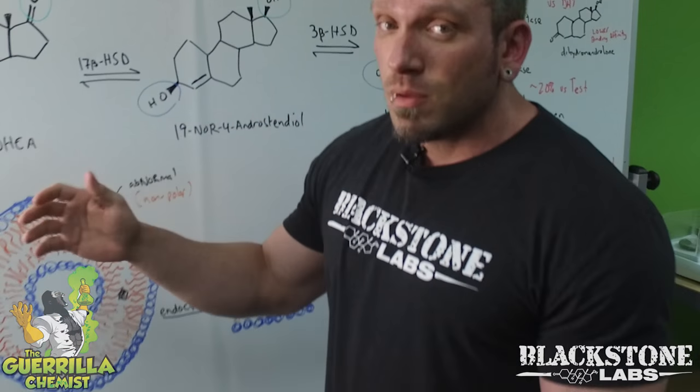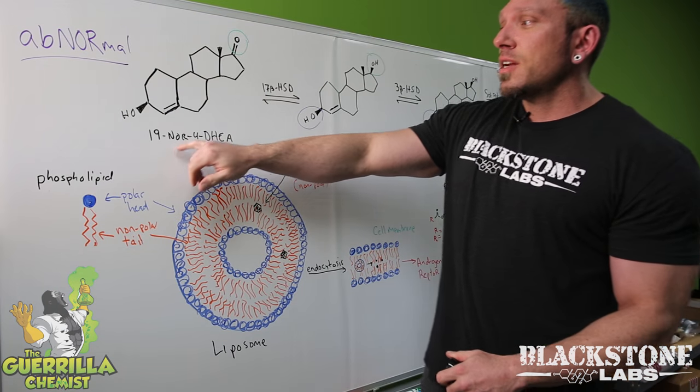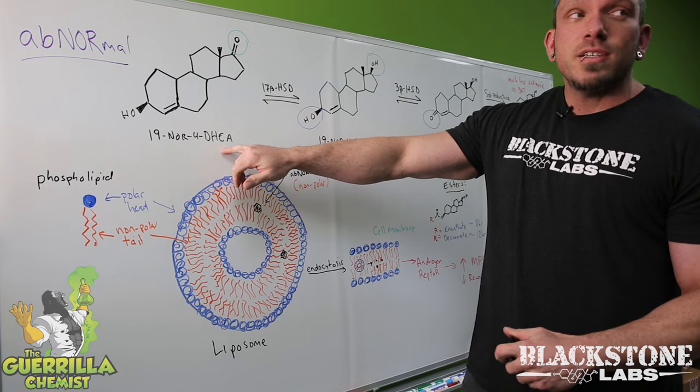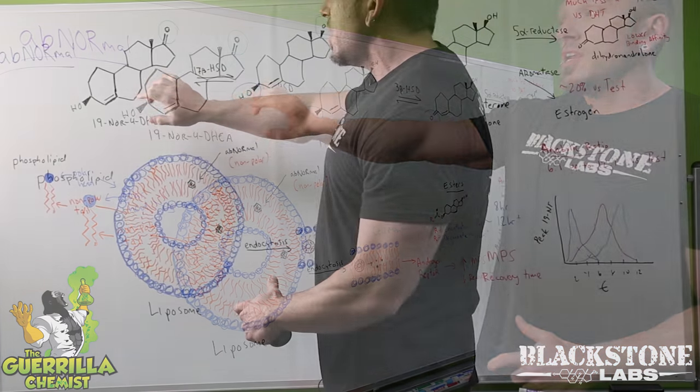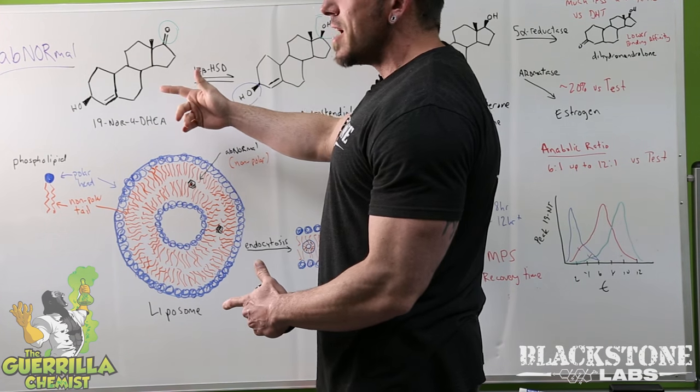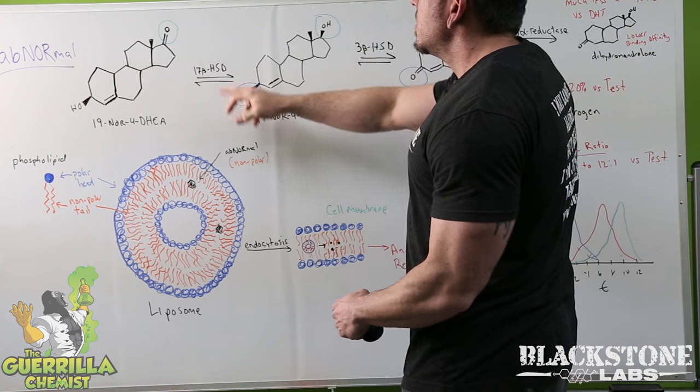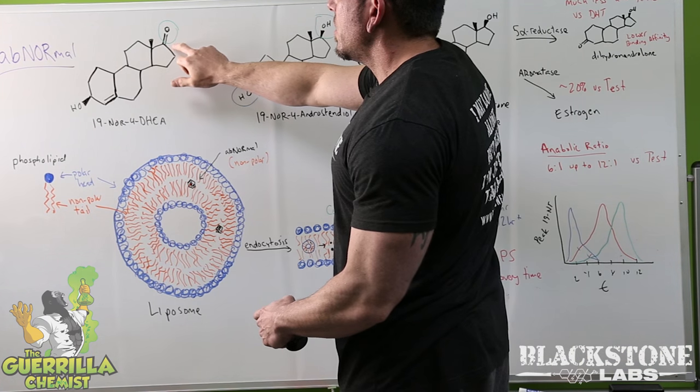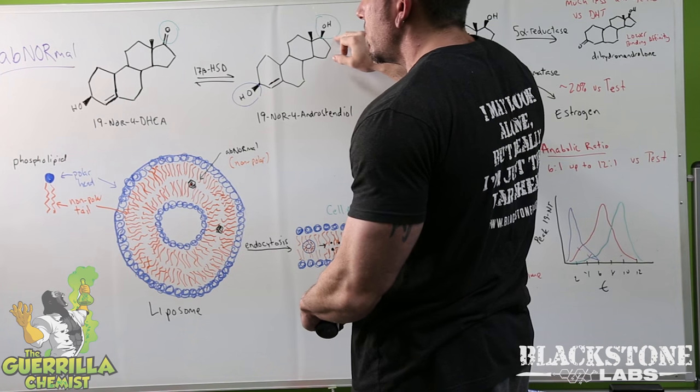The main ingredient is 19-nor-4-DHEA. On its own right now it's inactive and it needs two enzymatic steps inside the body to convert into the active compound. The first enzymatic step is taking this ketone here on the 17th carbon and converting it into a hydroxyl group via the enzyme 17-beta hydroxy steroid dehydrogenase.